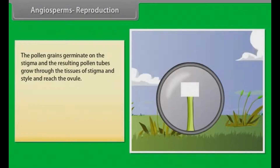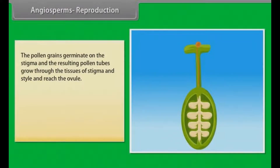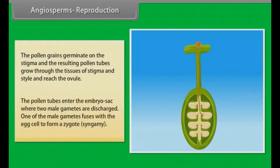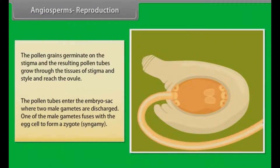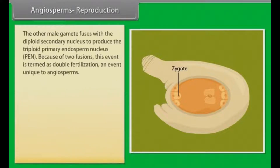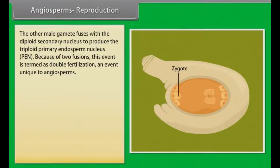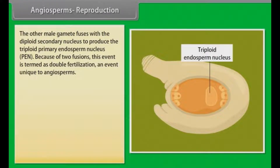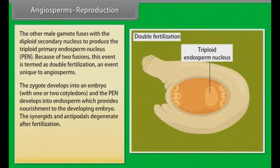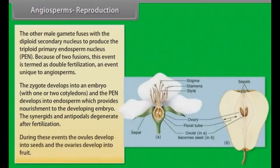The pollen grains germinate on the stigma and the resulting pollen tubes grow through the tissues of the stigma and style and reach the ovule. The pollen tubes enter the embryo sac where two male gametes are discharged. One male gamete fuses with the egg cell to form a zygote (syngamy); the other fuses with the diploid secondary nucleus to produce the triploid primary endosperm nucleus (PEN). Because of these two fusions, this event is termed double fertilization — unique to angiosperms. The zygote develops into an embryo with one or two cotyledons, the PEN develops into endosperm providing nourishment to the embryo, and the ovules develop into seeds while ovaries develop into fruit.